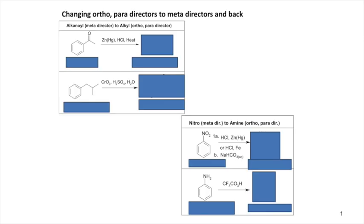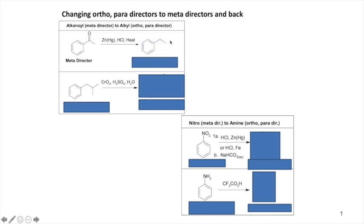Here's a little review and warm-up for today's lecture. We learned that you could take acetophenone — a benzene ring with a ketone — and it's a meta director because there's no lone pair to resonate out. If you treat it with zinc amalgam and HCl with heat, you can reduce that carbonyl completely to just an alkyl chain. Now it's no longer a meta director — it's an ortho/para director. So the ketone was a meta director and deactivator; the alkyl chain is an ortho/para director and weak activator.